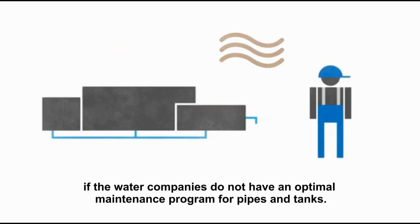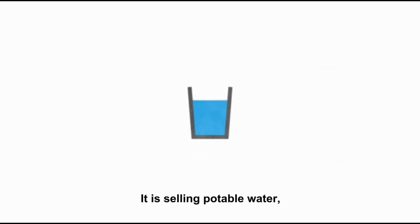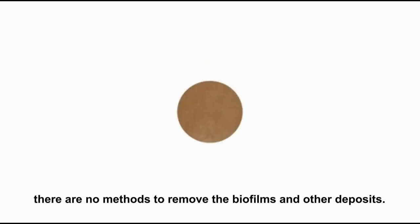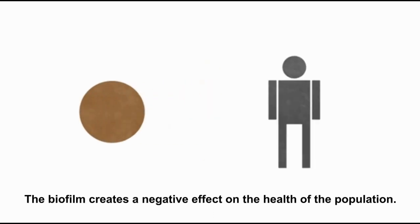Potable water quality decreases if water companies do not have an optimal maintenance program for pipes and tanks. It is like selling potable water but served in a dirty glass. Although there are different methods and recommendations for cleaning and disinfection of pipes and tanks, there are no methods to remove the biofilm and other deposits. The biofilm creates a negative effect on the health of the population.